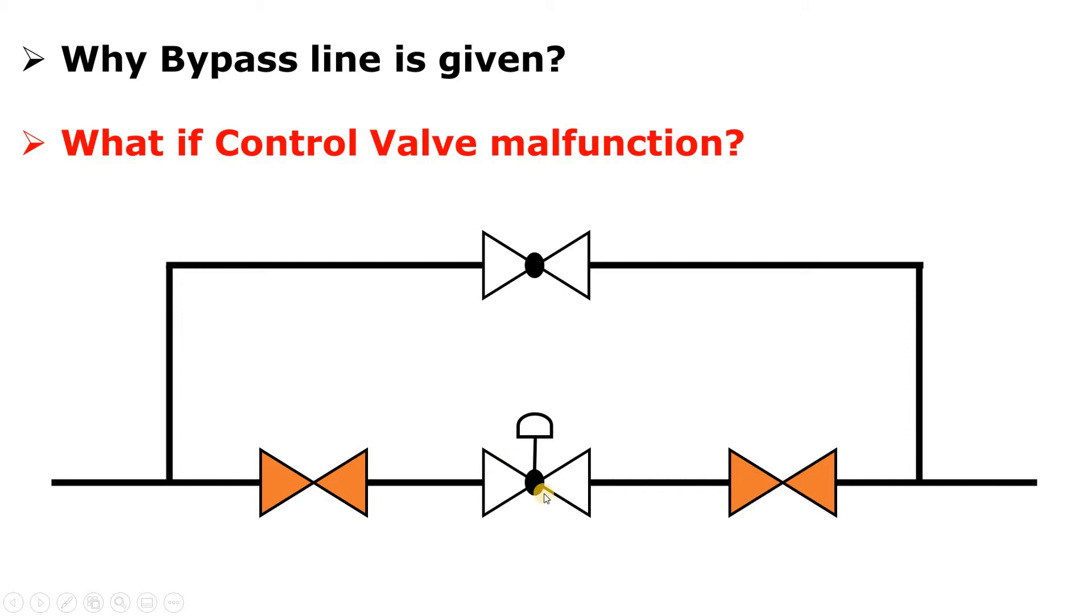Okay, so the first question is why the bypass line is given. The second question is related to the first question. It means that let's suppose if you have to do some maintenance or there is some instrumentation work in the control valve.